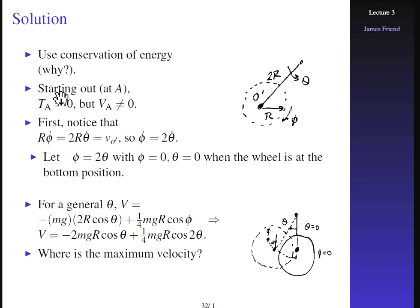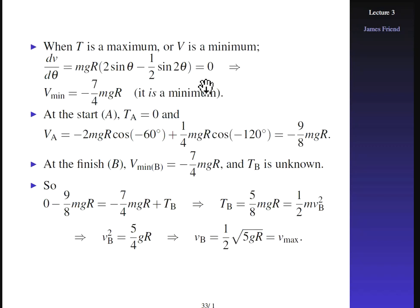The maximum velocity occurs when kinetic energy is maximum, which is when potential energy is minimum (conservation of energy: T + V = constant). To find the minimum potential energy, set dV/dθ = 0. The minimum potential energy turns out to be −(7/4)MgR. Try working that out yourself.